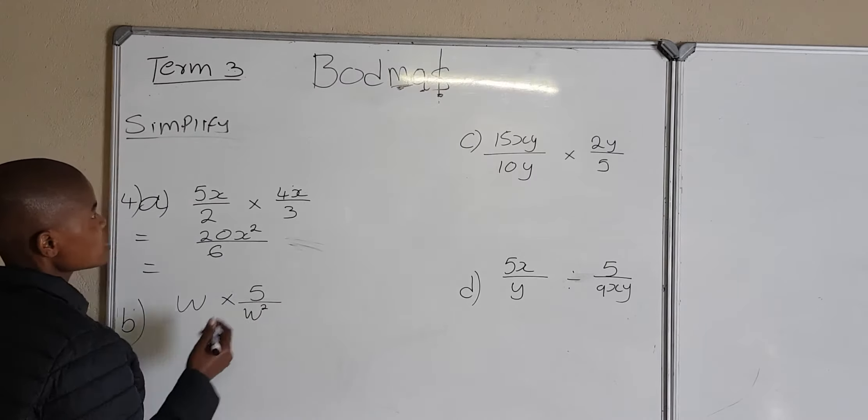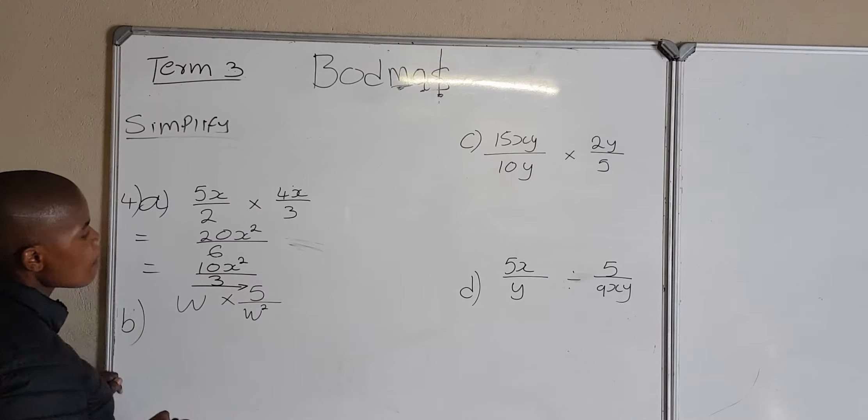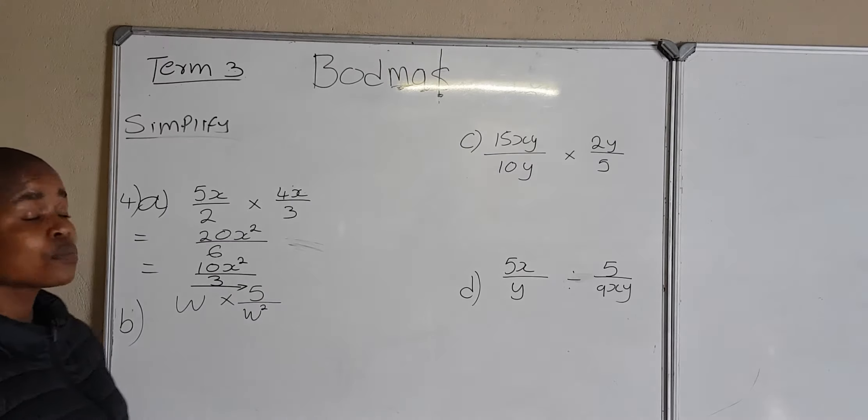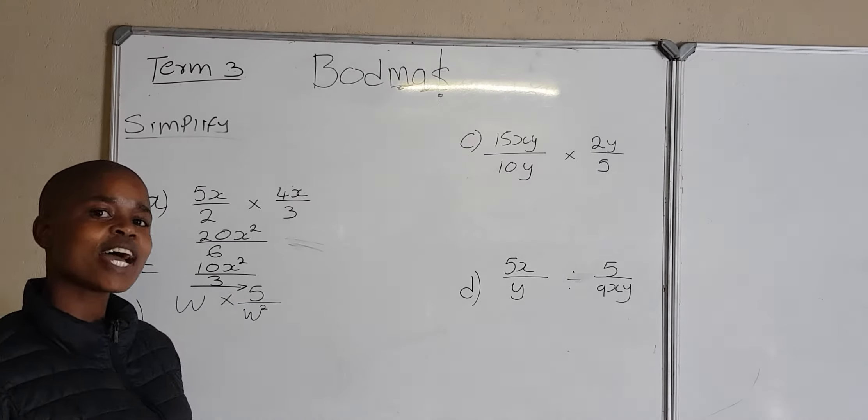So we're going to look for the factors of 20 and the factors of 6. The highest common factor will be 2. How many times does 2 go into 20? It goes 10 times. And my x squared remains x squared. How many times does 2 go into 6? It goes 3 times. Therefore, my expression is simplified and I am done.